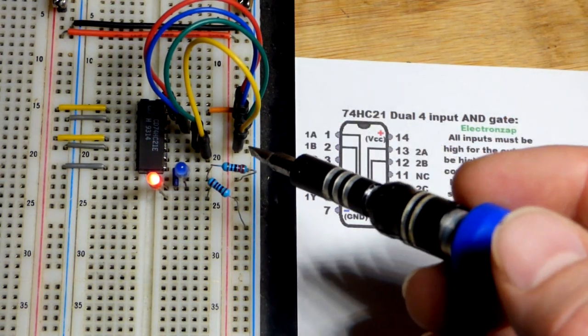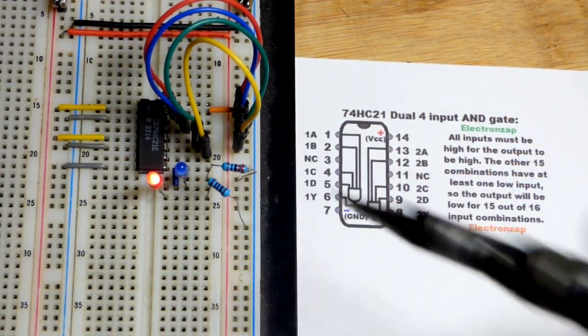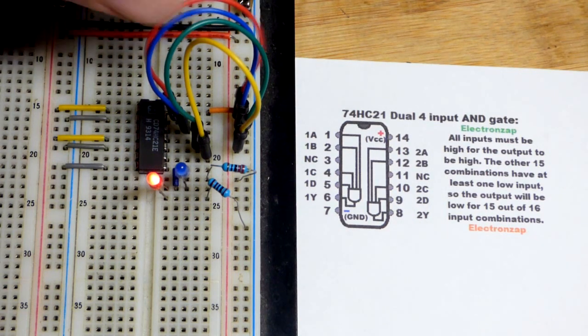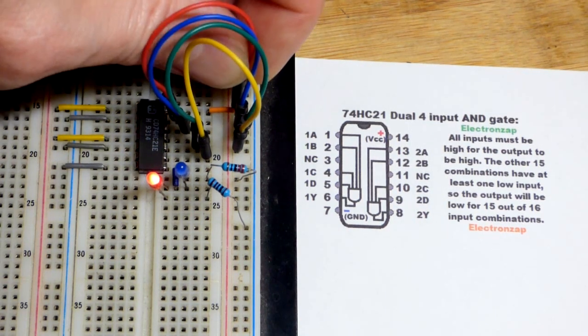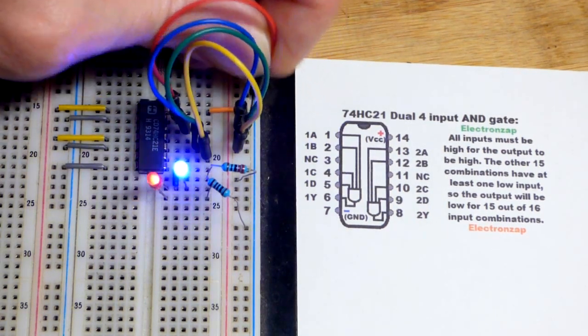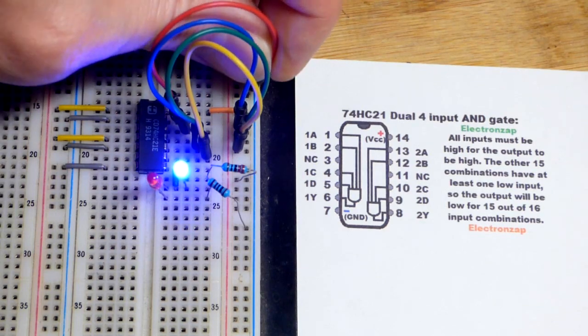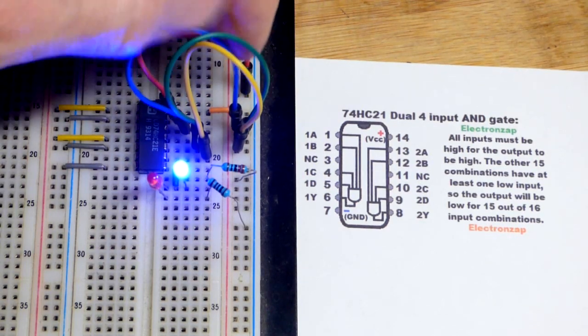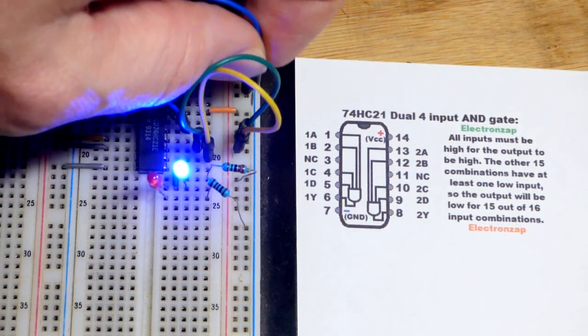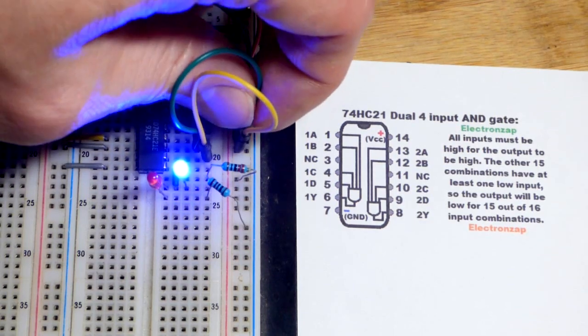So there you can see we moved our way down until they're all high and the output is high. Pretty simple. We can work our way down and start setting them low. It's a little hard to see down there, maybe I'll move it up there so it's a little easier to see and we're going to keep going low.